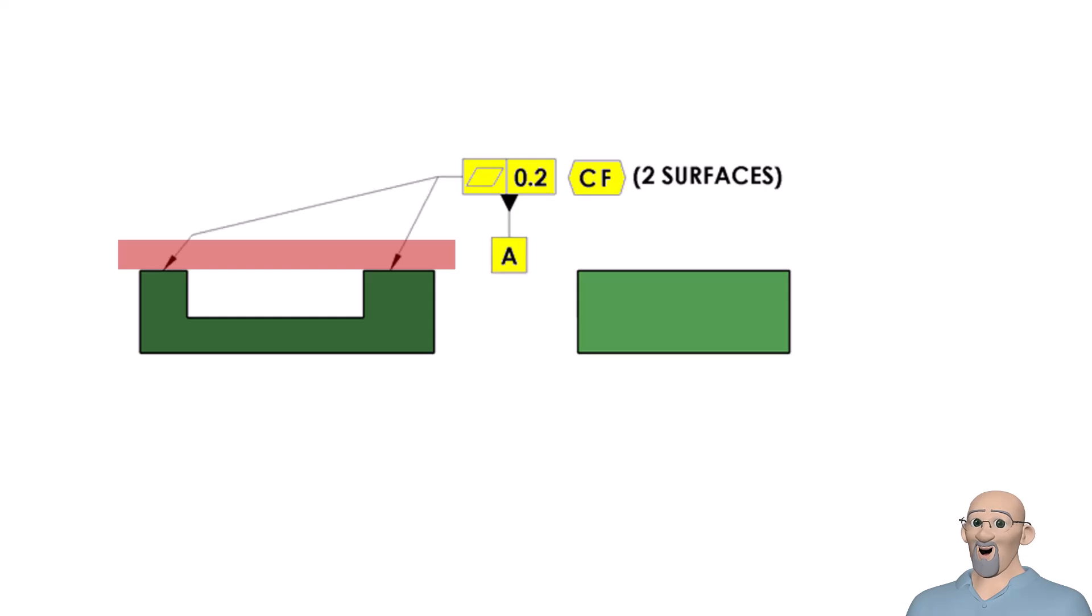Remember we must also tolerance the datum feature or features. We can control both the form and coplanarity by using the continuous feature modifier to define them as one feature. We will then apply flatness.